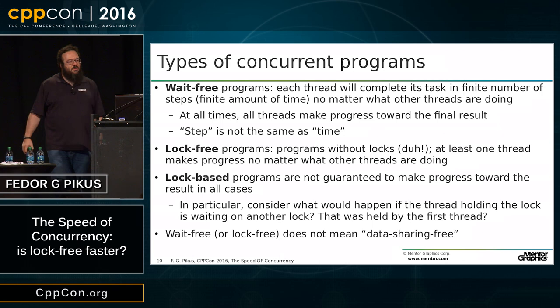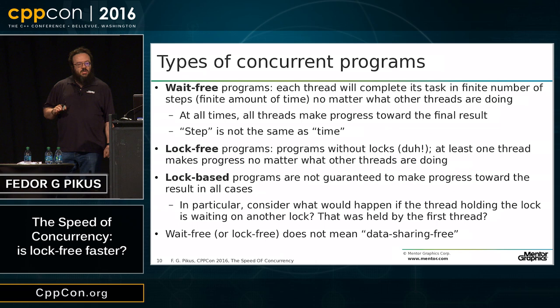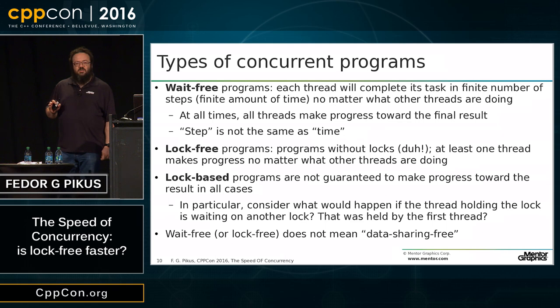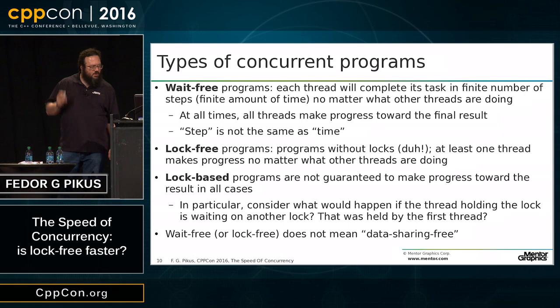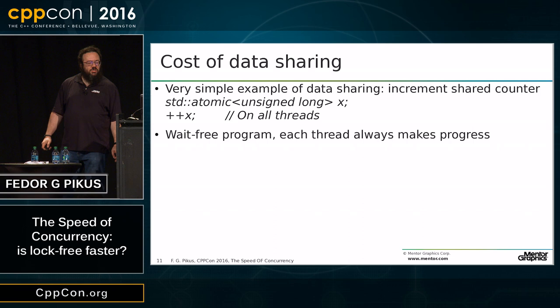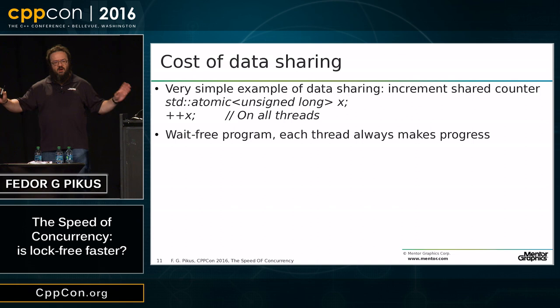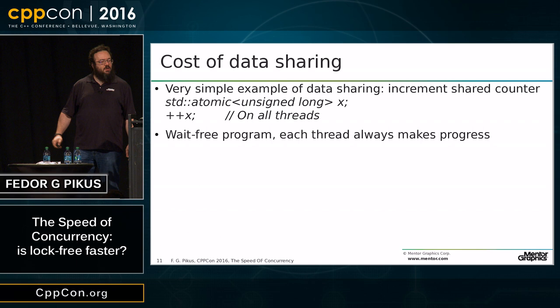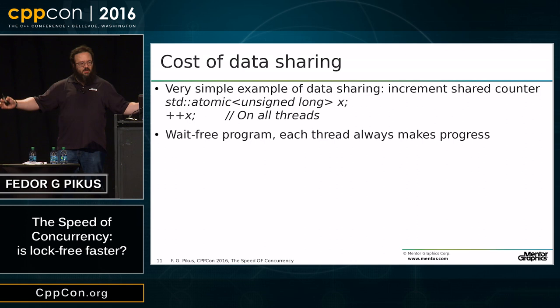Several types of concurrent programs: wait-free programs, where each thread will complete its task in a finite number of steps; lock-free programs, where at least one thread is making progress at any time; and lock-based programs, where it's not guaranteed that anything is making any progress. Wait-free or lock-free doesn't mean it's not sharing any data — it just means it does it in a way that doesn't require locks. So how much does it cost you to share data? Let's take a very simple example: an atomic integer that we increment on all threads at once. It's a wait-free program.